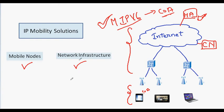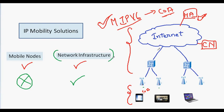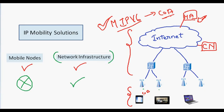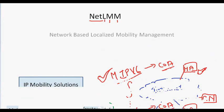The second kind of IP Mobility solution is where the network infrastructure does all the hard work to keep the connectivity of the mobile node. The mobile node is unaware of whatever is going on to keep the connection active. The mobile node just moves from one access router to the other access router, but the address which was assigned may remain the same. Such a solution, where only the network infrastructure is involved in maintaining the connection or the IP address, is called a network-based localized mobility management solution.